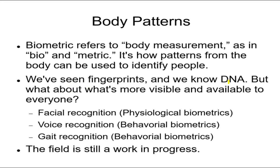Biometrics includes fingerprints and DNA. Fingerprints are a bodily measurement that can identify a single person, and DNA is also specific to a particular individual — when we get the DNA information we can identify the person. So technically those are also biometrics, but we're talking about the more futuristic ones: facial recognition, voice recognition, and even gait recognition.